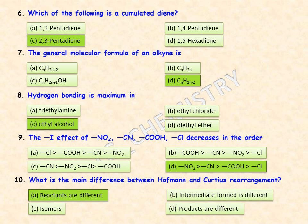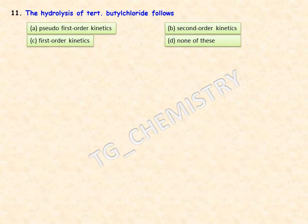The hydrolysis of tert-butyl chloride follows which order of kinetics? Options are first order, second order, pseudo first order, and none of these. The correct option is first order kinetics.